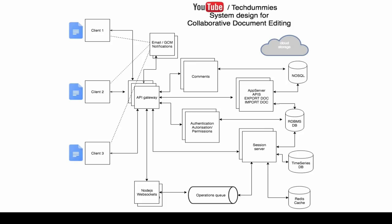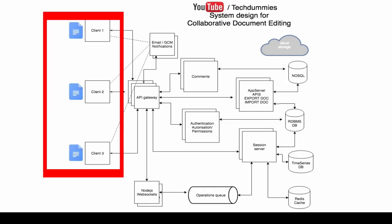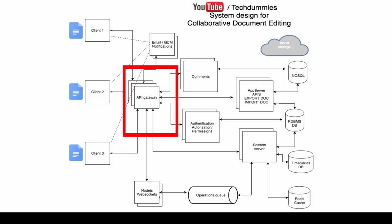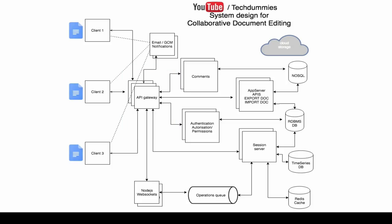On the left side, for representation purposes, there are three clients connected. They all interact with the API gateway for any operation — whether to get comments on a Google Doc, send notifications, grant permissions, or anything else. It always goes through the API gateway.